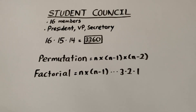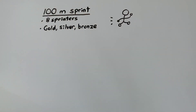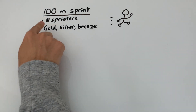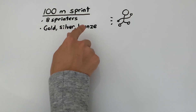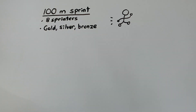Now let's get on to another permutation problem. This time we're at the Olympics — it's the 100 meter sprint, and there are 8 sprinters competing for gold, silver, and bronze medals. So how many ways can the medals be awarded?